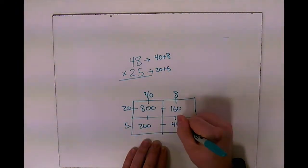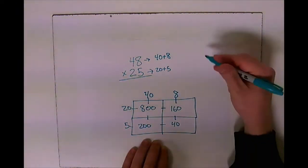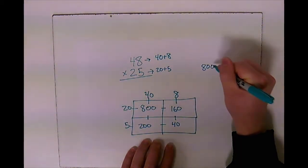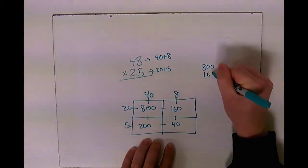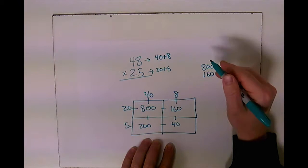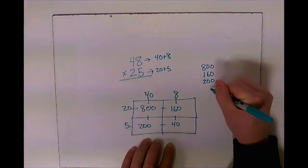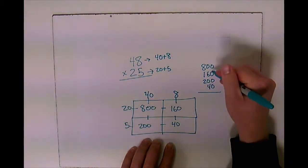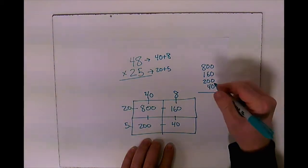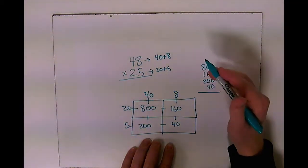Now I'm going to take all those numbers, make sure that I line them up just right, and then I'm going to add them all up. Since they're already lined up according to place value, this should be pretty easy.